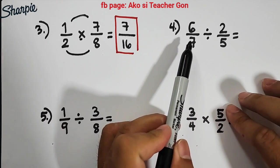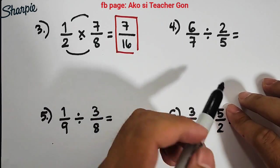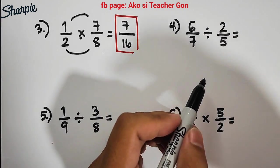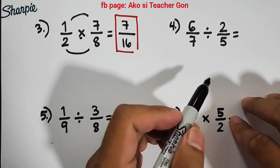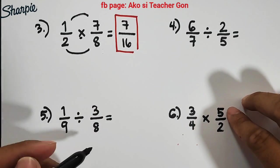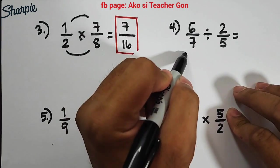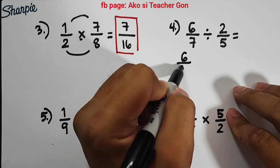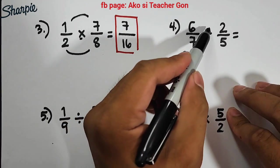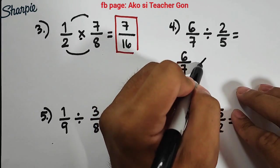For number four, this is division. We have 6/7 divided by 2/5. Remember this guys: when you're dividing fractions, you will go through multiplying fractions again. First, we need to copy the first fraction, we have 6/7. Copy the first fraction, then this division symbol or operation, you will change this into multiplication.